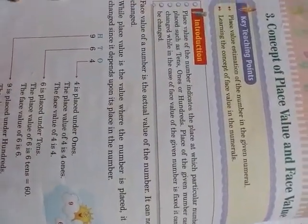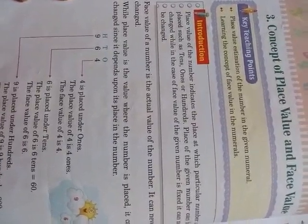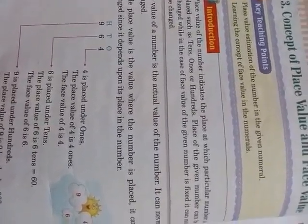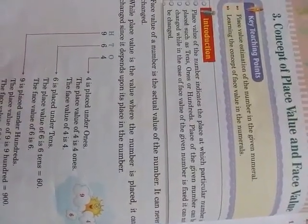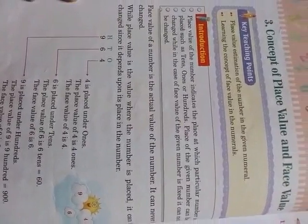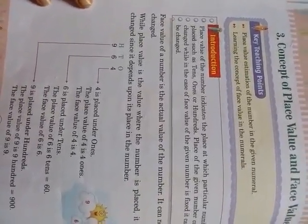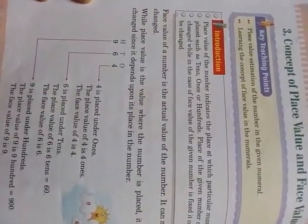Place value and face value are related to the single digit given in your number. Now I am going to tell you what face value is. The face value of a digit is the actual value of that digit — whatever number is written. If they ask you for the face value, you write it as it is. Face value will never change; it will always remain the same, whatever the digit they ask you for.